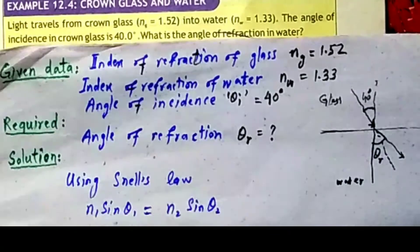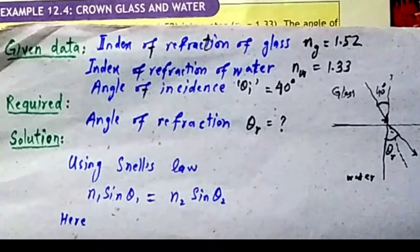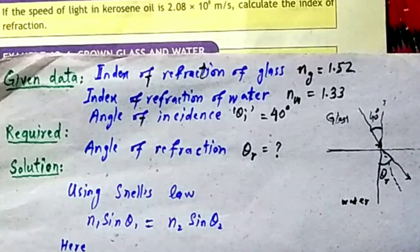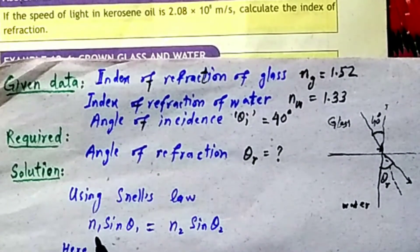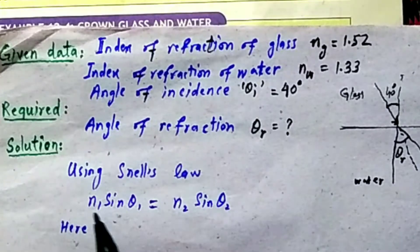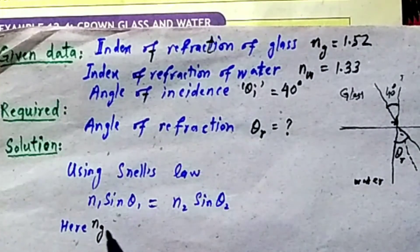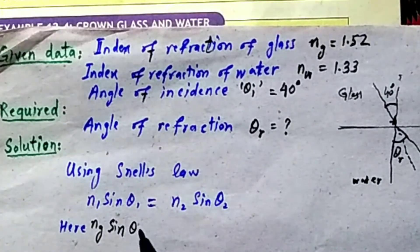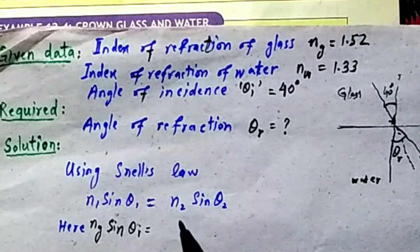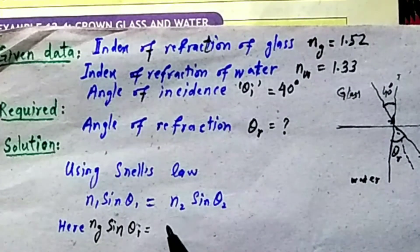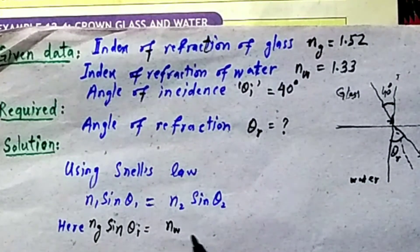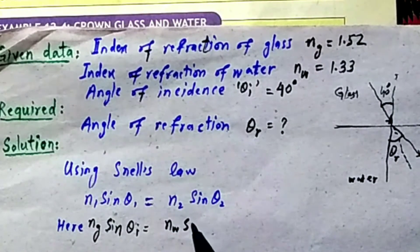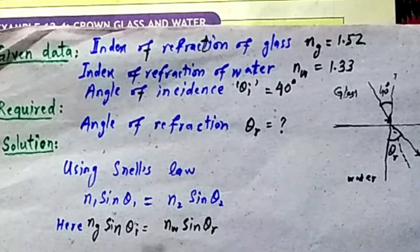To find the angle of refraction, we use Snell's law: N1 sin theta1 = N2 sin theta2. N1 is the refractive index of glass, sin theta1 where theta1 is the angle of incidence in glass. N2 is NW, the refractive index of water, sin theta2 where theta2 is theta_R.